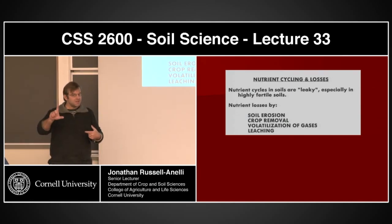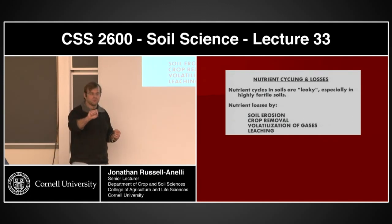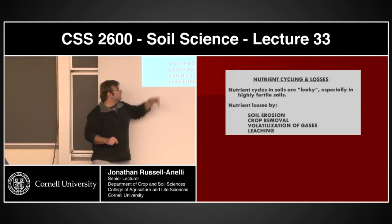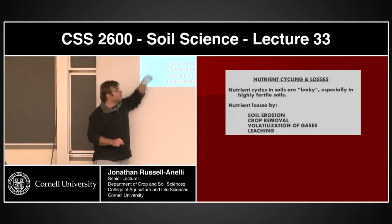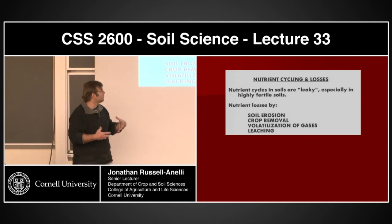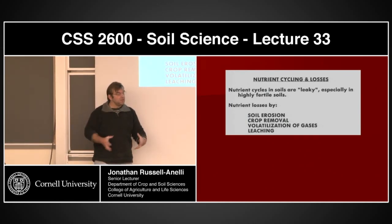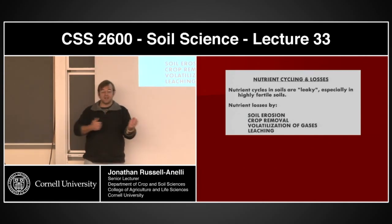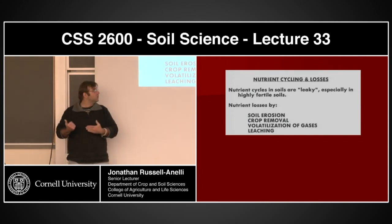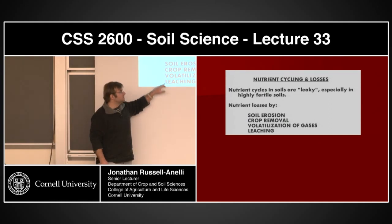Think about that term for a second — why are they especially leaky in highly fertile soils? Nutrient losses basically depend on four things: soil erosion — if I'm taking the soil away, I'm going to be taking the nutrients away. Certainly, if I have crops that are taking nutrients up, when I harvest that crop and take it someplace else, the nutrients are going to be going with it. I also have volatilization of gases and leaching.